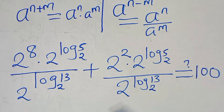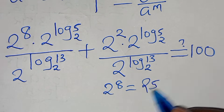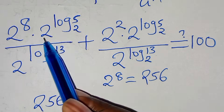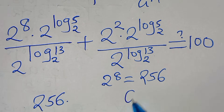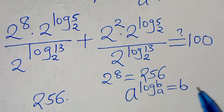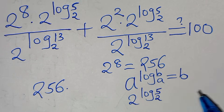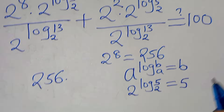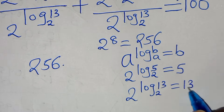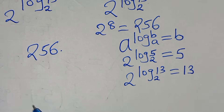Now 2^8 equals 256. Using the identity a^(log_a(b)) = b, we get 2^(log_2(5)) = 5 and 2^(log_2(13)) = 13. So we have 256 times 5 divided by 13, plus 4 times 5 divided by 13.